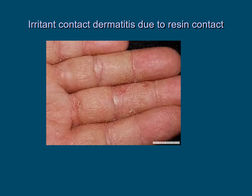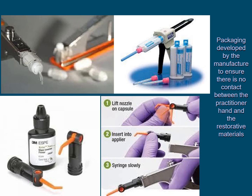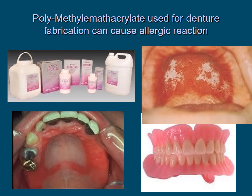This image is an example of irritant contact dermatitis due to resin contact, which is basically irritation and inflammation of the skin. This slide shows the different packing methods developed by manufacturers to ensure there is no contact between the practitioner's hand and the restorative material. Some materials are particularly likely to cause an allergic reaction; these include polymethyl methacrylate used in denture fabrication and latex rubber surgical gloves.